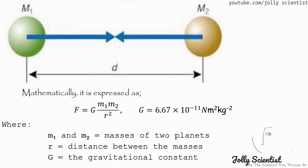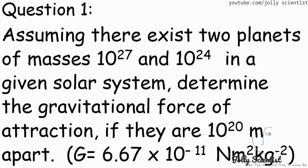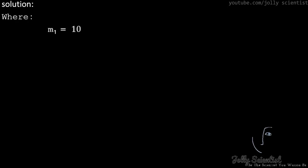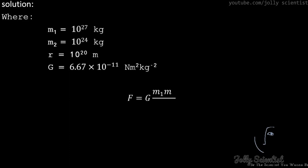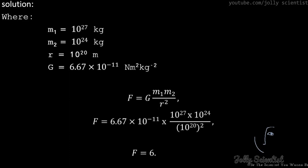Let's solve a problem. Question 1: Assuming there are two planets with masses 10 to the power of 27 and 10 to the power of 21 in a given solar system, determine the gravitational force of attraction if they are 10 to the power of 20 meters apart. Solution: M1 is 10²⁷, M2 is 10²⁴ kg, R is 10²⁰, and G is 6.67 times 10 to the power of negative 11 N·m²/kg². Substituting the values, F equals 6.67 N·m.